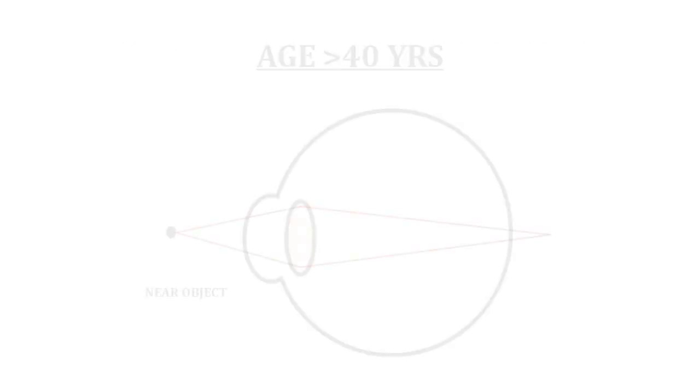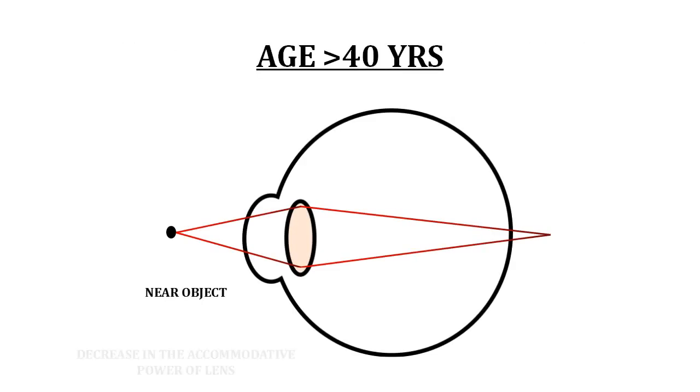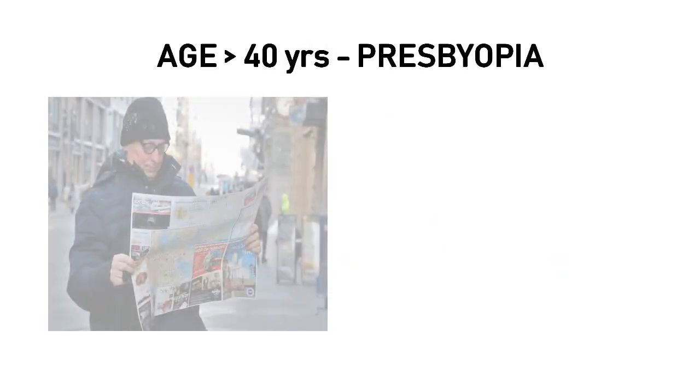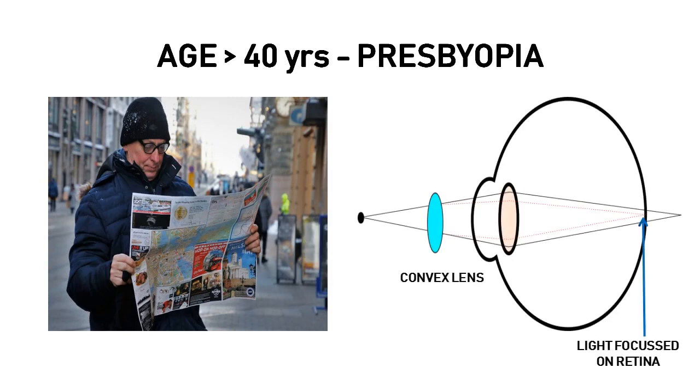But after the age of 40 years, there is decline in this accommodative power of the lens, so the person has difficulty in focusing while doing near work. This condition is known as presbyopia. And now this person needs to wear convex glasses, which are plus powered glasses, so that he can do near work comfortably. Presbyopia is a type of hypermetropia. It is a physiological condition and it happens in all emetropic individuals after 40 years of age.